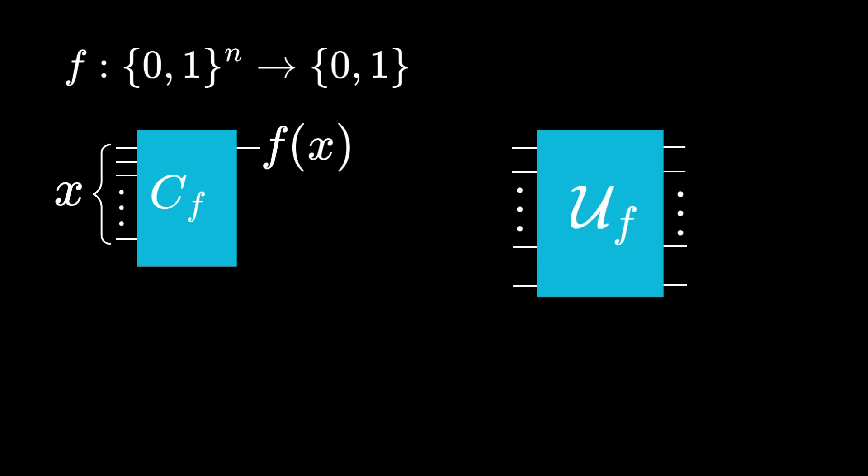Now we want to convert this circuit into a quantum circuit where each gate is a unitary operator and the number of registers for the input and output are the same. In a separate video, I will show you how to do this conversion, but for now, we just need to know that this is possible.